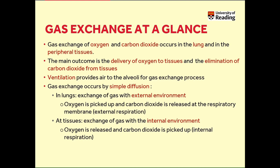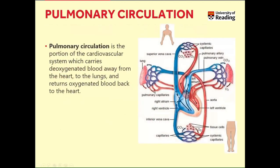You will also understand how important it is that the surface area of the alveoli is large to favour the simple diffusion of gases. To understand gas exchange, it is important to remember the role of the pulmonary circulation, which is a portion of the cardiovascular system that carries deoxygenated blood away from the heart through the pulmonary artery to the lungs, and returns oxygenated blood back to the heart through the pulmonary vein.